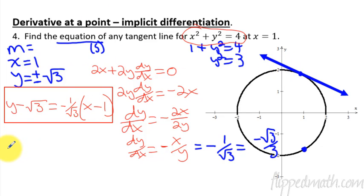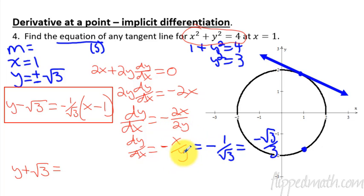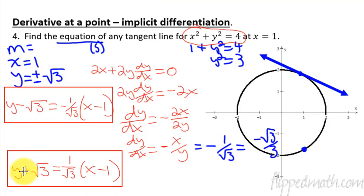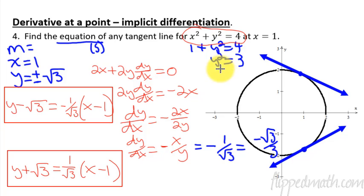The other equation: y plus square root of 3 — because now I'm doing the negative square root of 3 point — equals positive 1 over square root of 3 times x minus 1, because plugging in the negative square root of 3 makes the negatives cancel and the slope becomes positive. So there is the other equation with positive slope and there's the tangent line. You can see it's the same concept: the derivative represents the slope of a tangent line; it's just this extra added craziness of implicit differentiation.